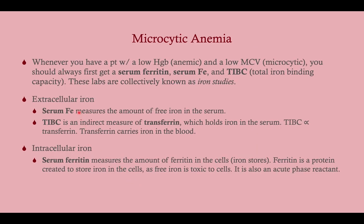When you've got a microcytic anemia, you should look for iron studies. The three components that are really important are ferritin, serum-free iron, and TIBC. We're looking at extracellular iron — iron in your peripheral circulation — which includes free iron measured as serum iron, and bound iron measured by TIBC (total iron binding capacity), which is an indirect measure of transferrin.